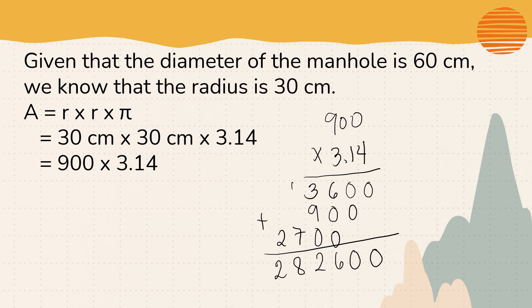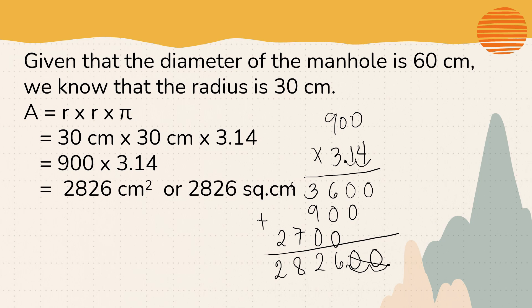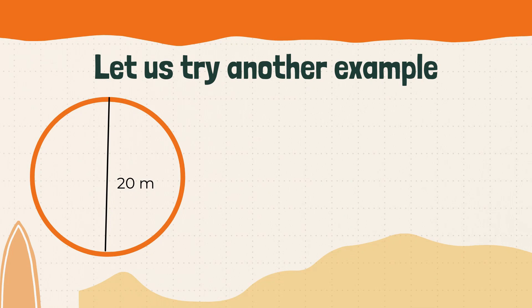Following the rule of multiplication with decimals, we move the decimal point in 3.14 — that is 2 places. So in the final product we move 2 places to the left, giving us the final answer of 2,826 square centimeters. Therefore, would the old manhole cover of 3,000 square centimeters be useful? The answer is no, because the area of the manhole opening is only 2,826 square centimeters — it is smaller.